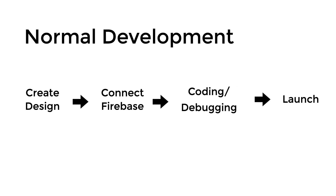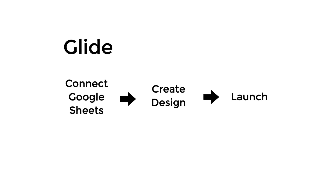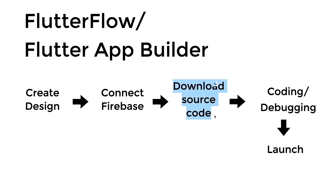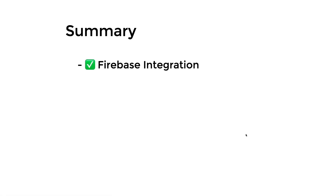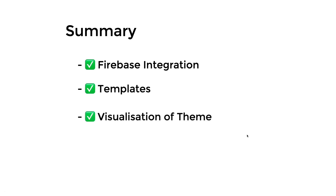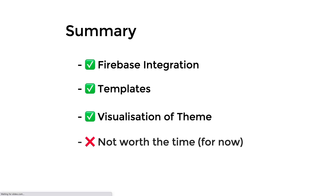An app builder that I really love is this thing called Glide. Glide connects Google Sheets and creates the design for you, and then you are able to launch it immediately. The problem with all the different app builders is that you will have to download the source code, and the thing is if you download anything and input it into your app it increases your development time significantly, even though the design is already in code. In summary, the good things about using Flutter Flow are easy Firebase integration, templates with integrated authentication, and the ability to visualize your app's theme. However, like all app builders, it is personally not worth the time for now to use app builders for code generation.